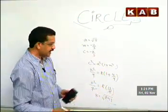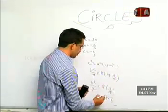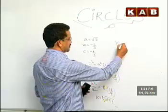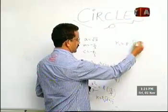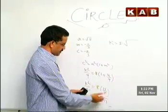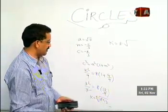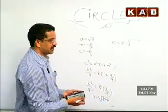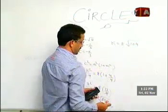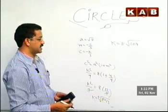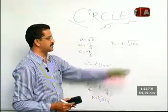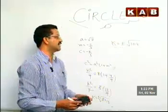The 9s cancel, giving k squared equals 8 times 13, which is 104. Because there are two possibilities, k equals plus or minus root of 104. Let me recheck — yes, it is 104. This is our eighth question.